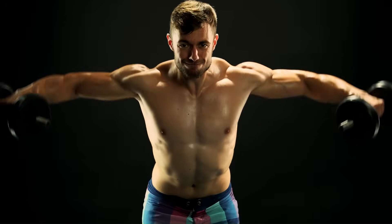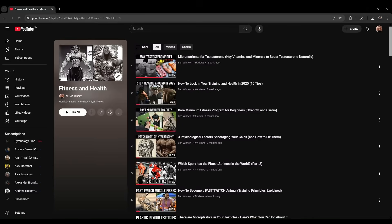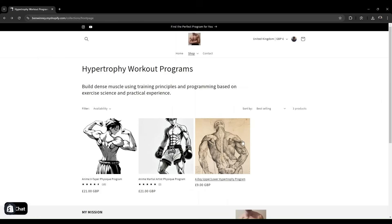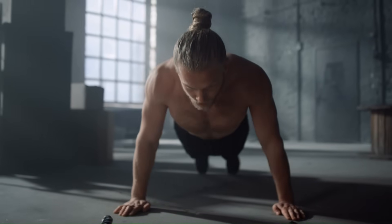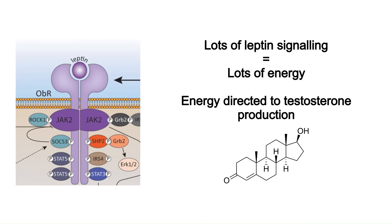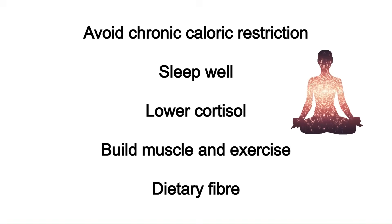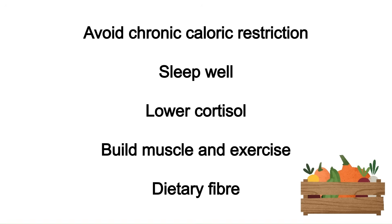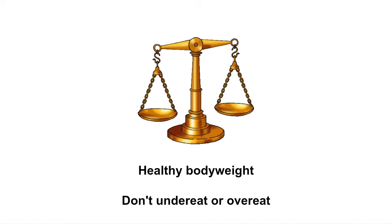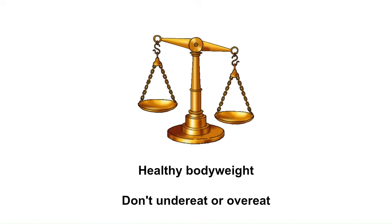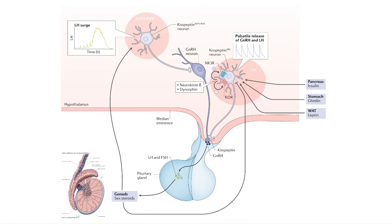You definitely need to be strength training and building muscle, which is very good for your metabolic health. To maintain good leptin signaling, avoid chronic caloric restriction, sleep well, lower your cortisol, build muscle, exercise, and eat some dietary fiber especially if you're obese. Essentially you need to stay at a healthy body weight — not starving yourself and not being overweight. That mostly covers the energy balance part of the kisspeptin equation.